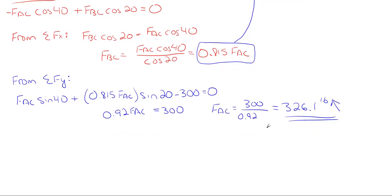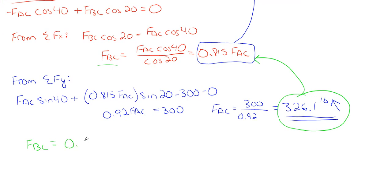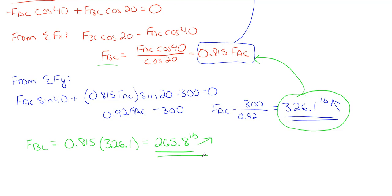We've found one of the cable tensions: FAC equals 326.1 pounds. Now I can take this value and plug it into the earlier expression to find FBC. So FBC equals 0.815 times FAC, which is 0.815 times 326.1, giving FBC equals 265.8 pounds in the upward-right direction.